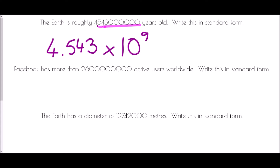Facebook has more than 2,600,000,000 active users worldwide — write this in standard form. Taking groups of three, that's 2.6 billion. We place the decimal point between the 2 and the 6 to get 2.6. We then count the spaces removed: three, six, nine — so the answer is 2.6 × 10⁹.